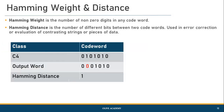In the fourth example we see only one pair of data having different bits, whereas the other values are exactly identical. That is why the hamming distance in this example is just one.